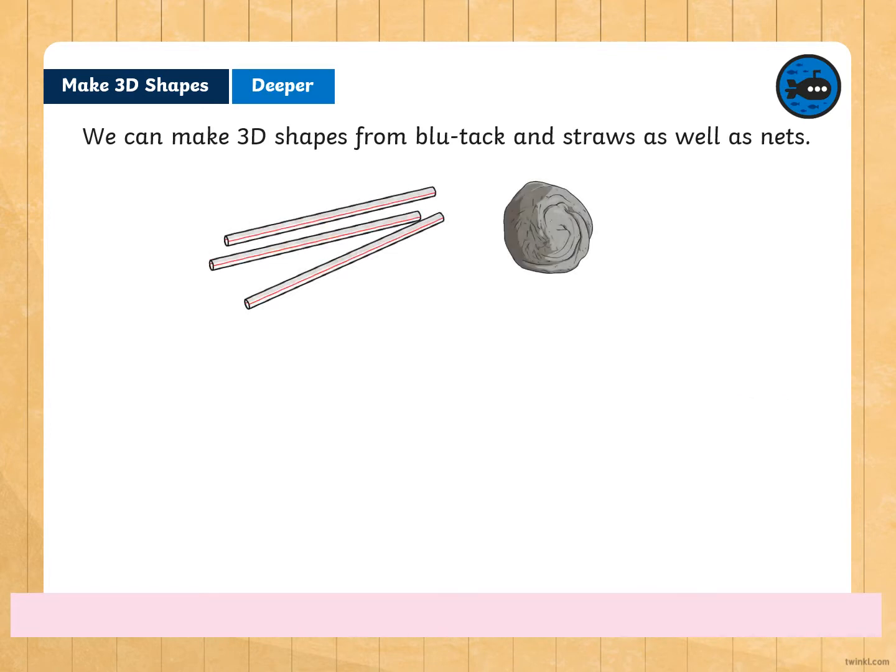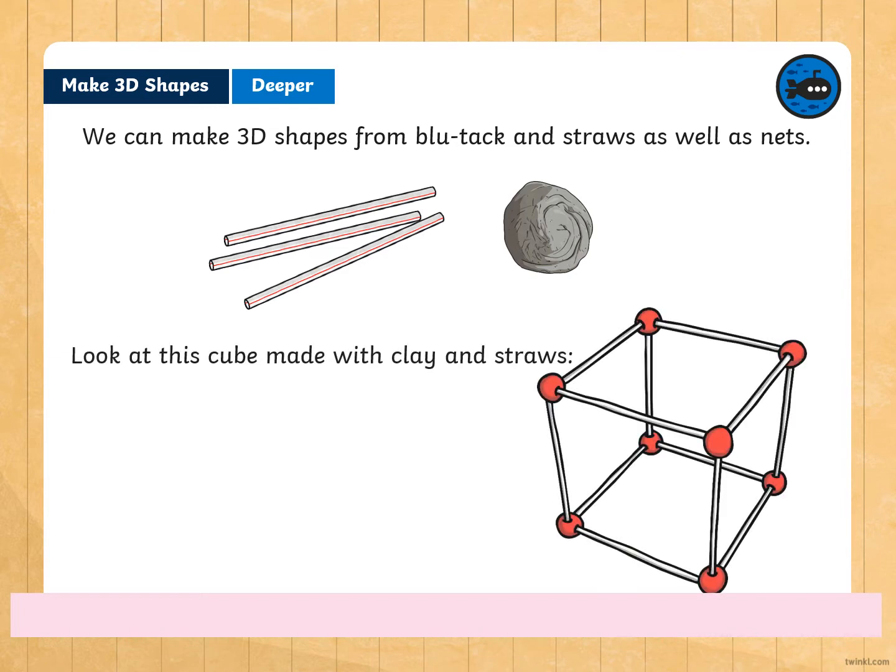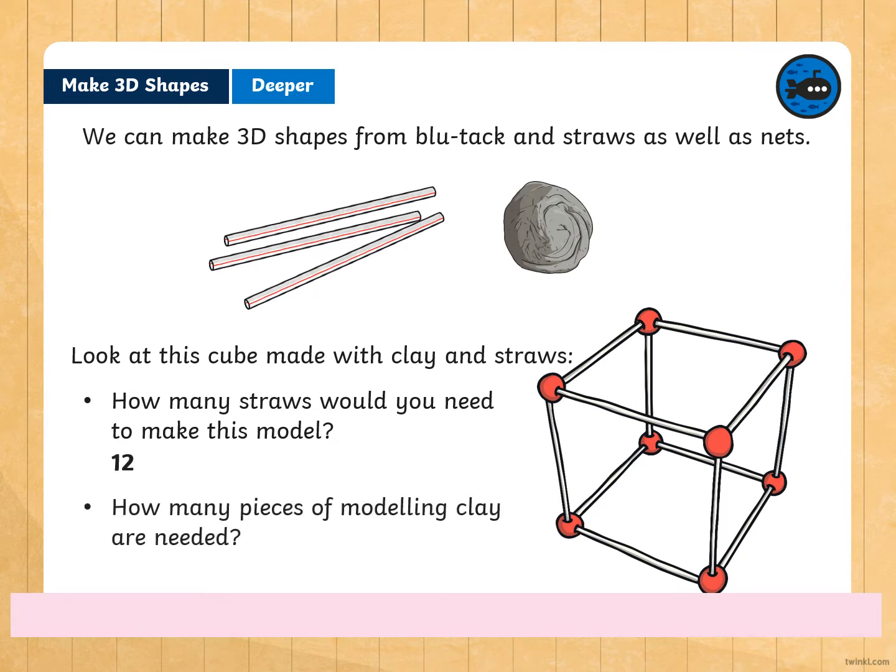We can make 3-dimensional shapes from blue tack and straws as well as nets. Look at this cube made with clay and straws. How many straws would you need to make this model? We have 12. And how many pieces of modeling clay are needed? Correct. There are 8. Sticks and blue tack models help you see the edges and vertices of a three-dimensional shape. The number of straws tells us how many edges we have and the number of modeling clay or the pieces of modeling clay tells us how many vertices does it have.